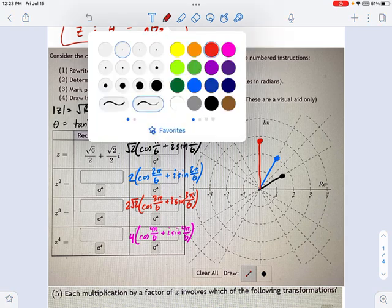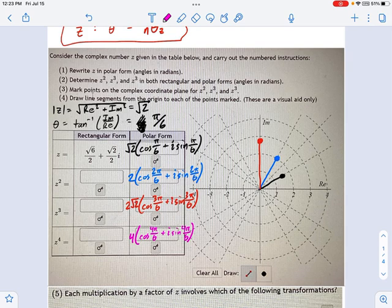And the fourth power of z, I've got this in magenta, we're going to continue rotating by the same pi over 6 angle every time. And now the radius has gone out to 4. So you see,